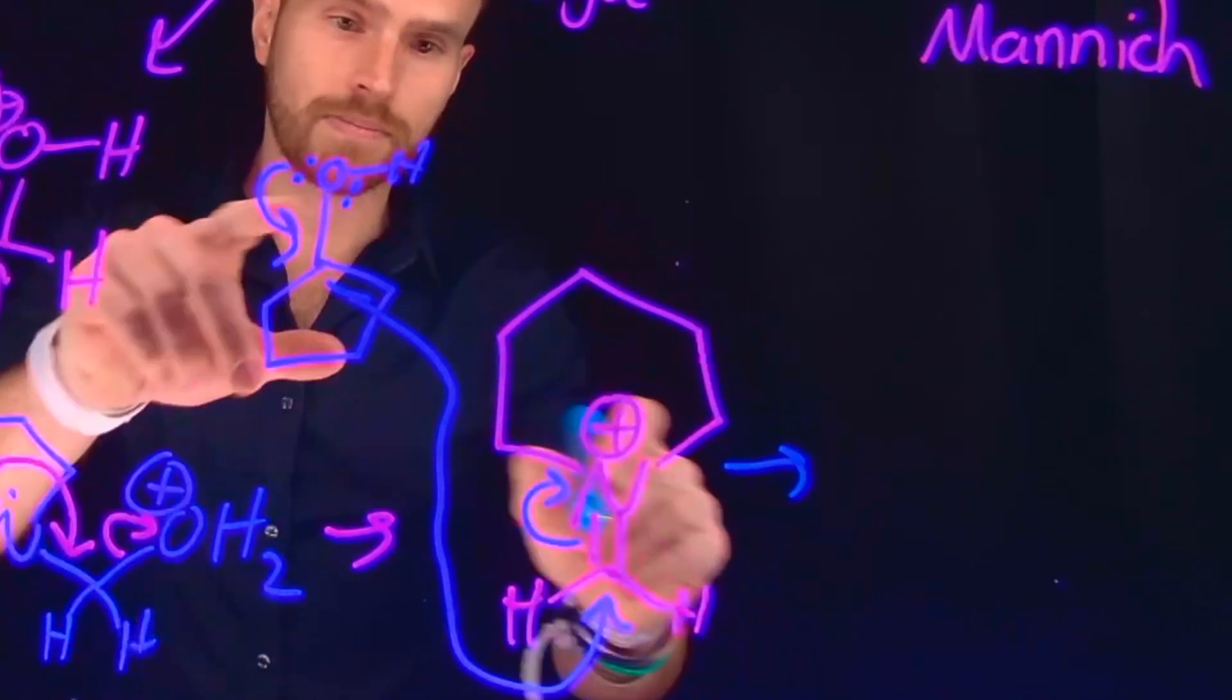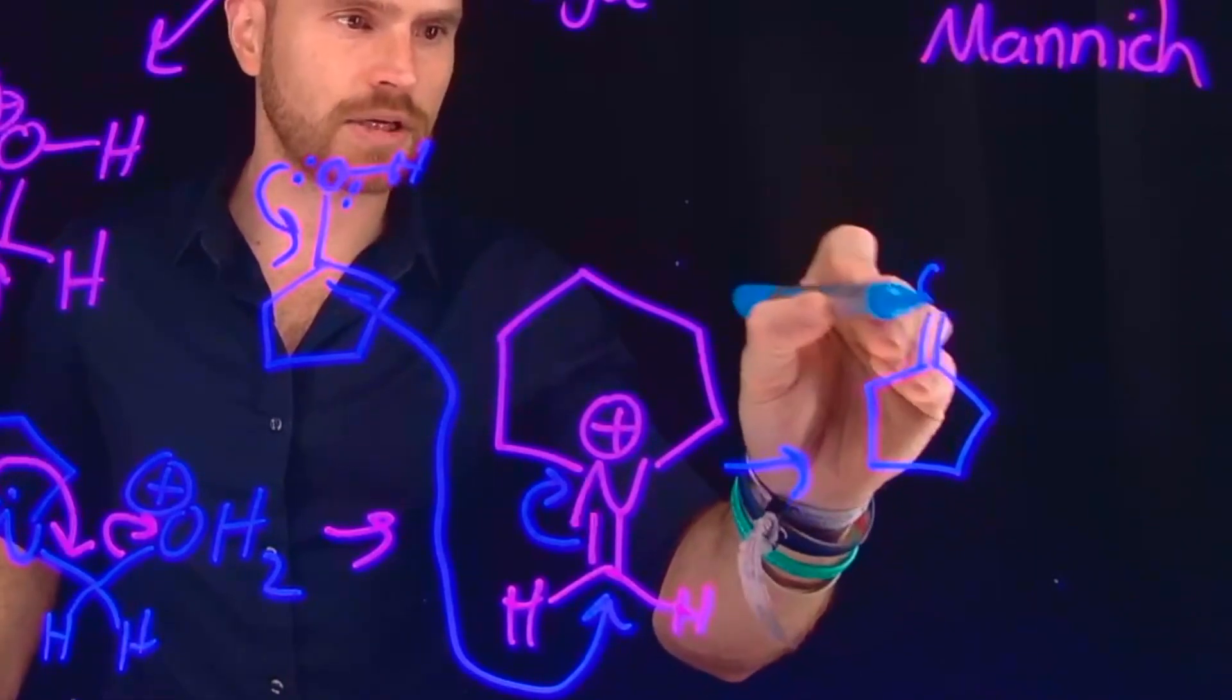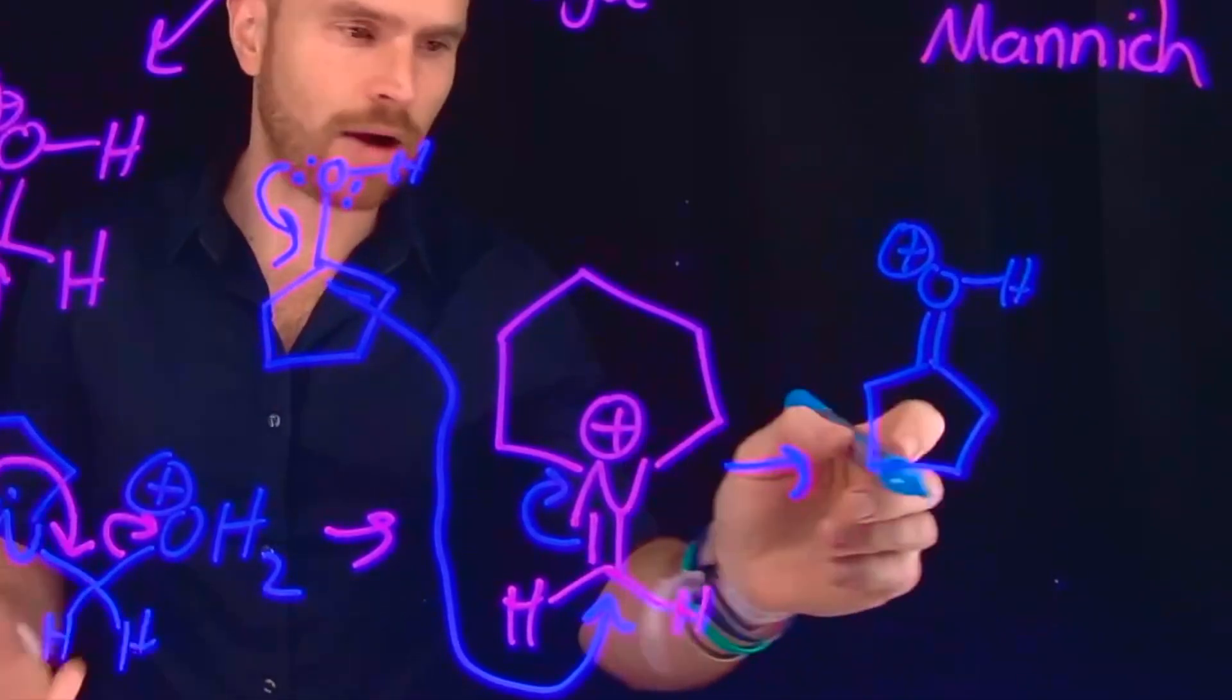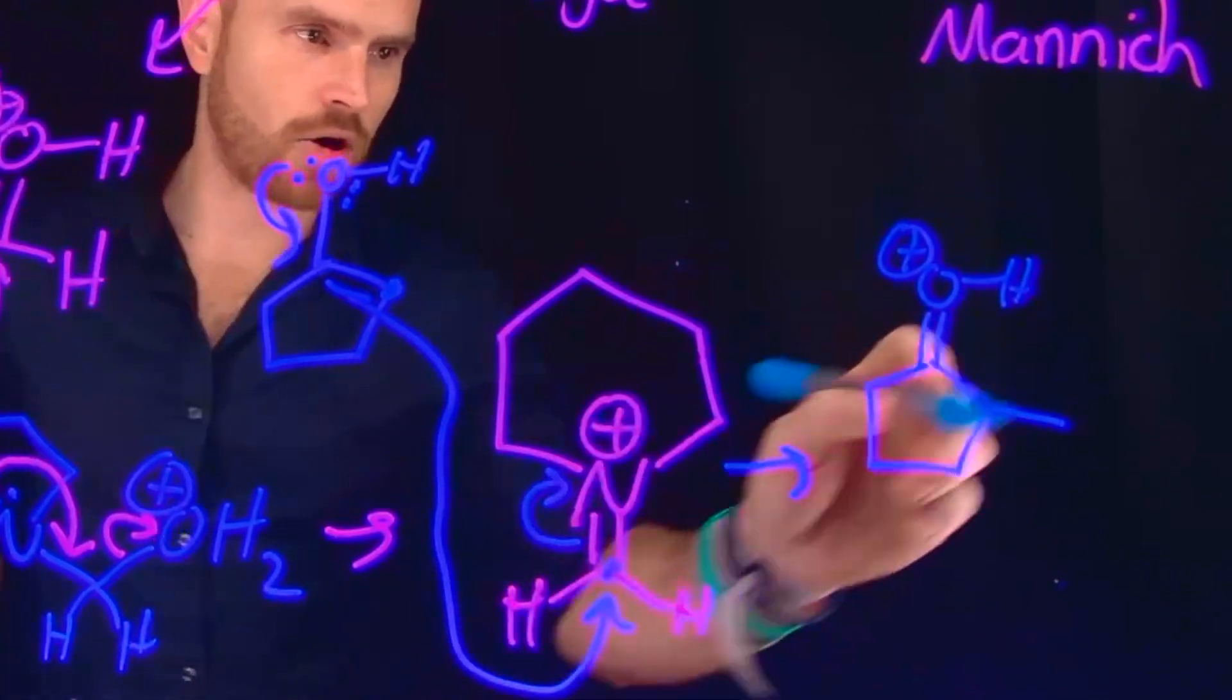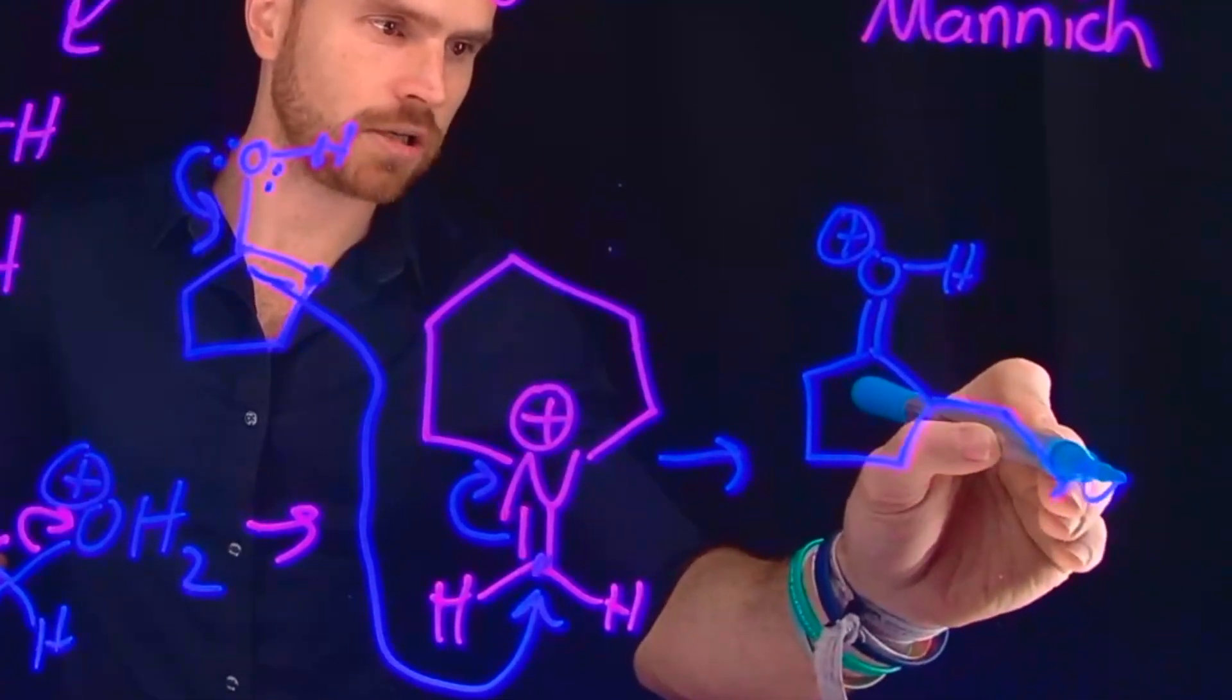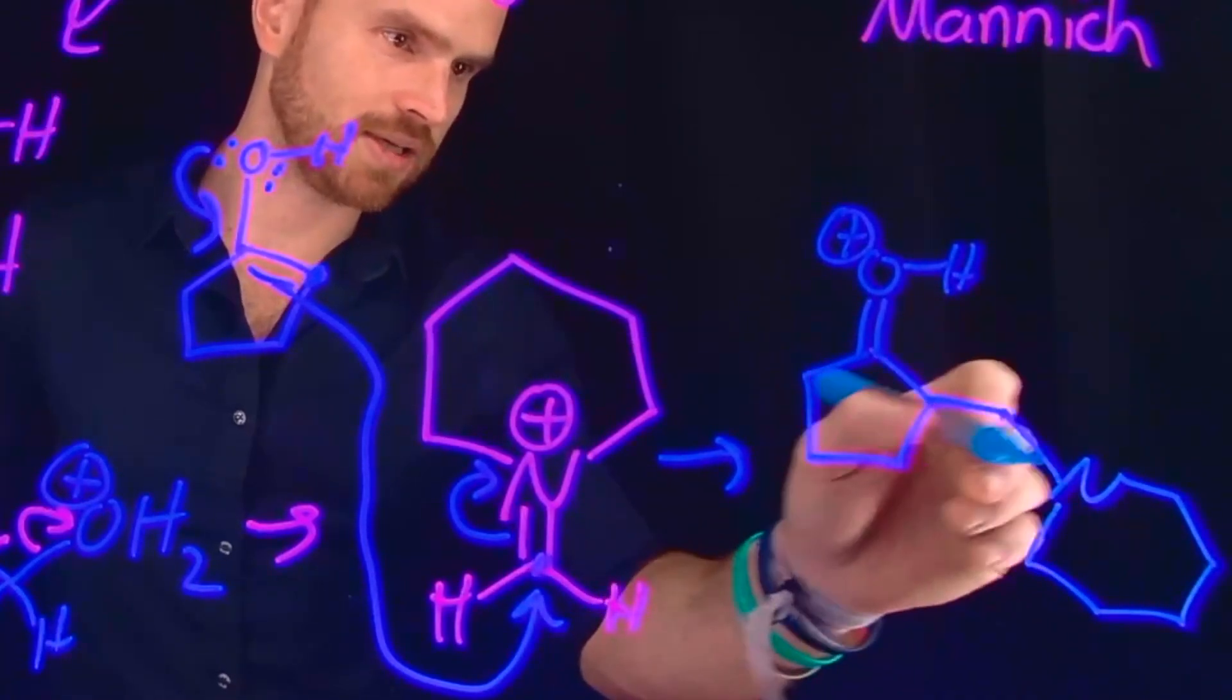However, notice that we'd be conserving the charge because now we're going to end up with a positively charged oxygen. And this is how we do that amino alkylation. So remember, we're forming a new carbon-carbon bond between this carbon and this carbon. And that is what is going to generate that amino alkylation where we are alkylating at this carbon position to this amine.